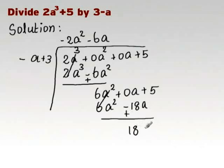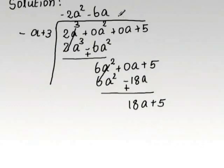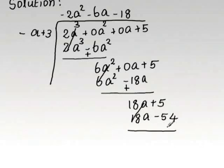And now, 18a plus 5 is the remainder and the last term in the quotient is 18. We get 18a minus 54.